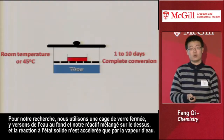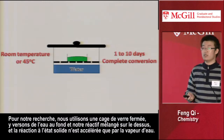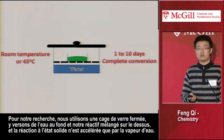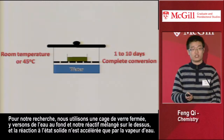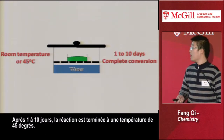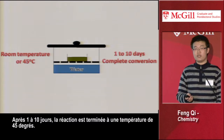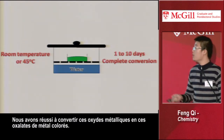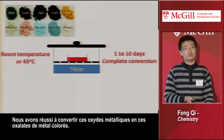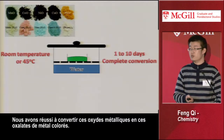In our research, we use a closed glass box. We put water in the bottom and put our mixed reagent on the top. This solid-state reaction is accelerated only by the water vapor. After 1 to 10 days, the reaction can be totally finished at a room temperature of 45 degrees. We have successfully converted those metal oxides to those colorful metal oxalate materials.